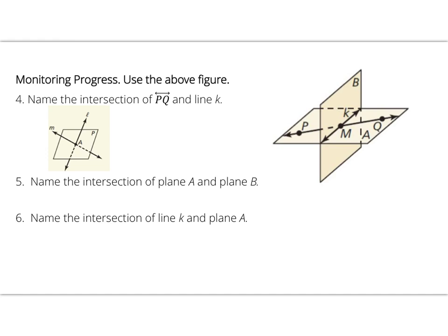For number 4, naming the intersection of line PQ and line K: PQ is on or contained in plane A, and line K is contained in both planes B and A. The point of intersection is point M.